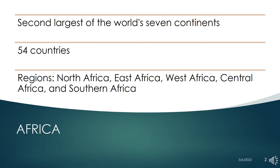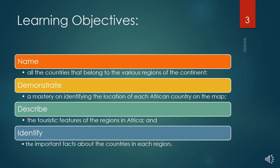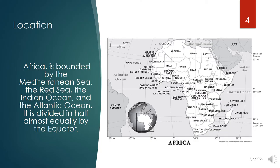Interesting places to visit will be provided in some of the major tourist destinations. At the end of this chapter, the students will be able to: 1. Name all the countries that belong to the various regions of the continent. 2. Demonstrate a mastery on identifying the location of each African country on the map. 3. Describe the touristic features of the regions in Africa. And 4. Identify the important facts about the countries in each region.